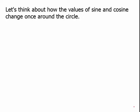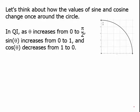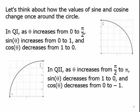Let's think about how the values of sine and cosine change once around the unit circle. In the first quadrant, as theta increases from 0 to pi over 2, x is decreasing and y is increasing. This means sine increases from 0 to 1 and cosine decreases from 1 to 0. In the second quadrant, as theta increases from pi over 2 to pi, both x and y are decreasing. Sine decreases from 1 to 0 and cosine decreases from 0 to negative 1.